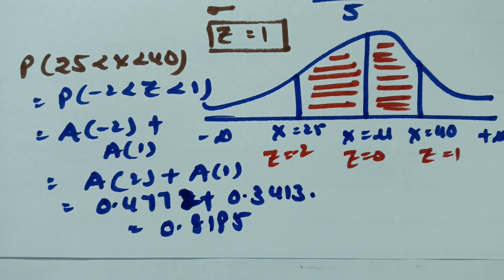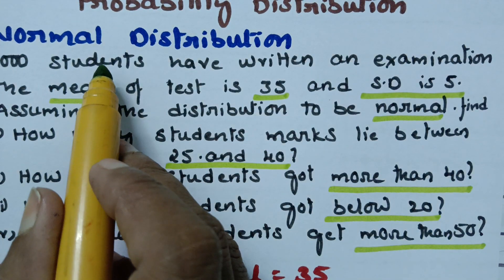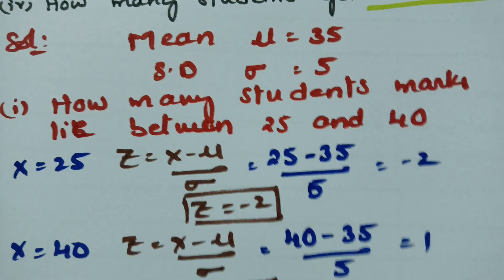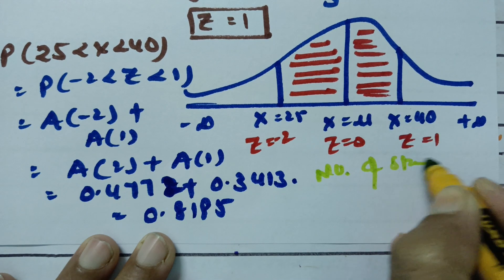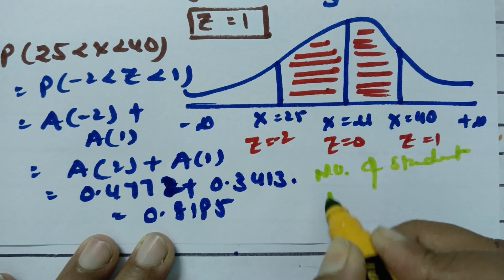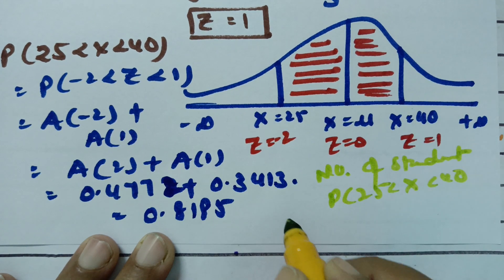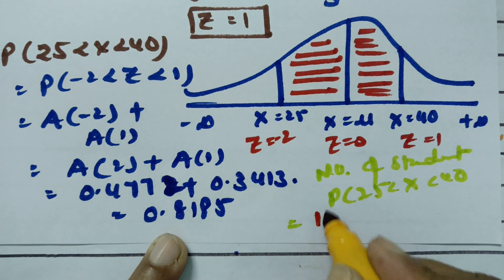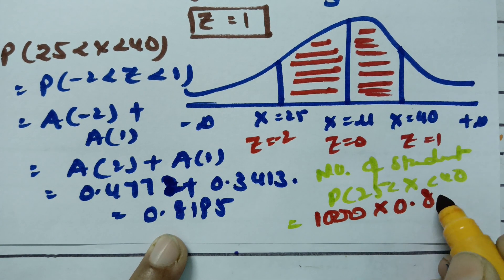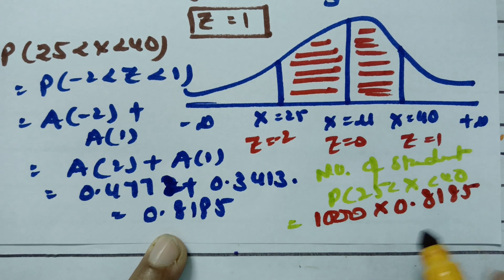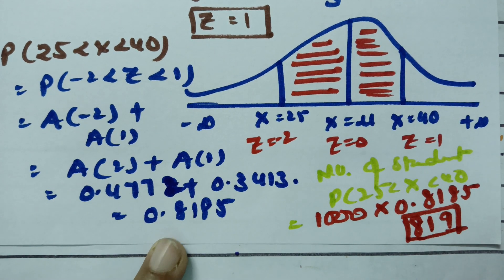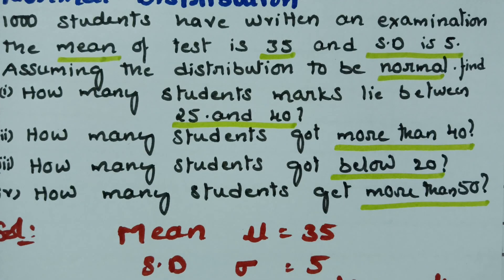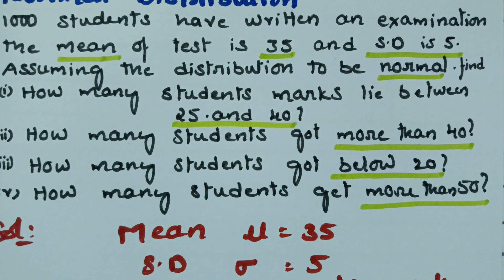There are 1000 students. Therefore the number of students who got marks between 25 and 40 is 1000 × 0.8185 = 818.5, approximately 819 students. That is the first solution. The second solution is how many students got more than 40.